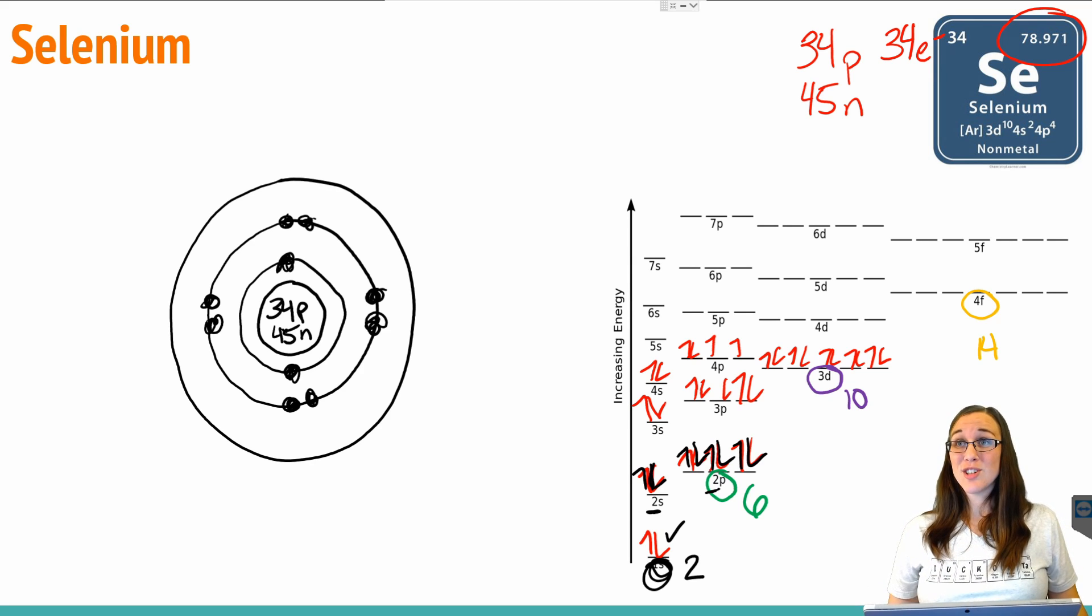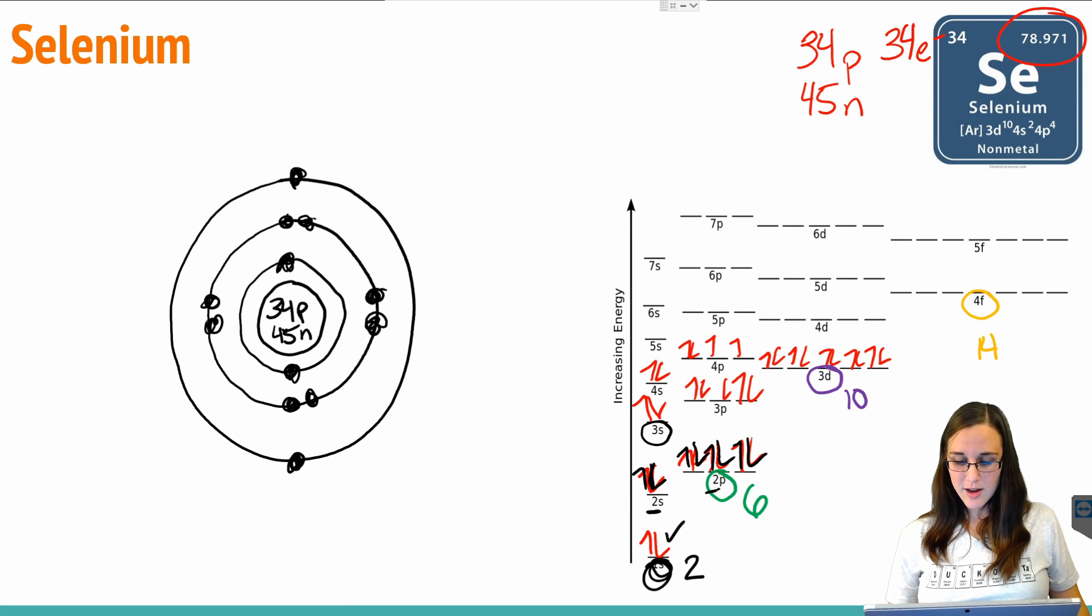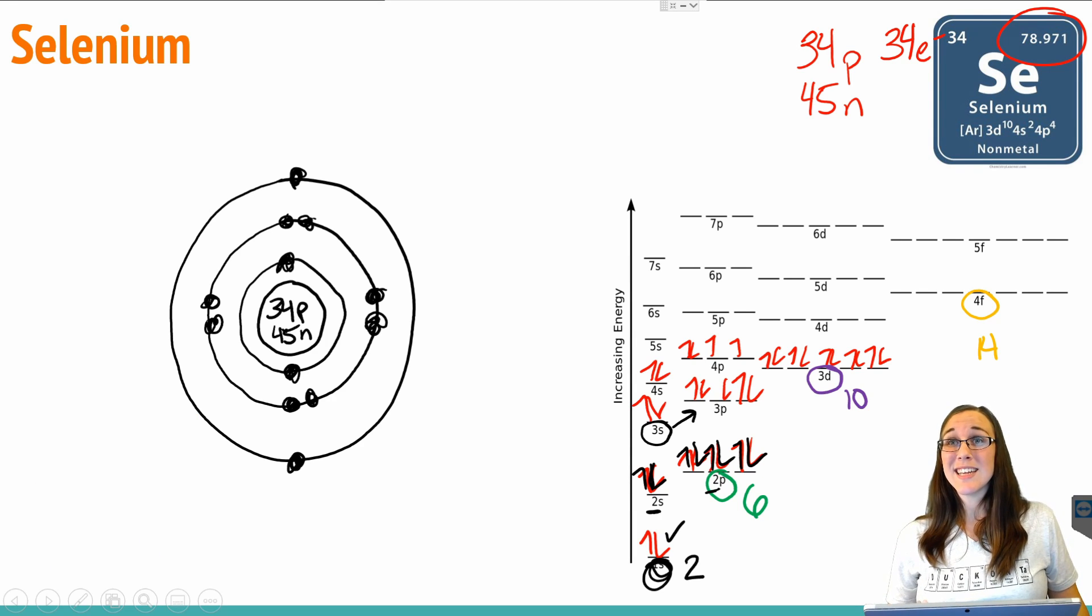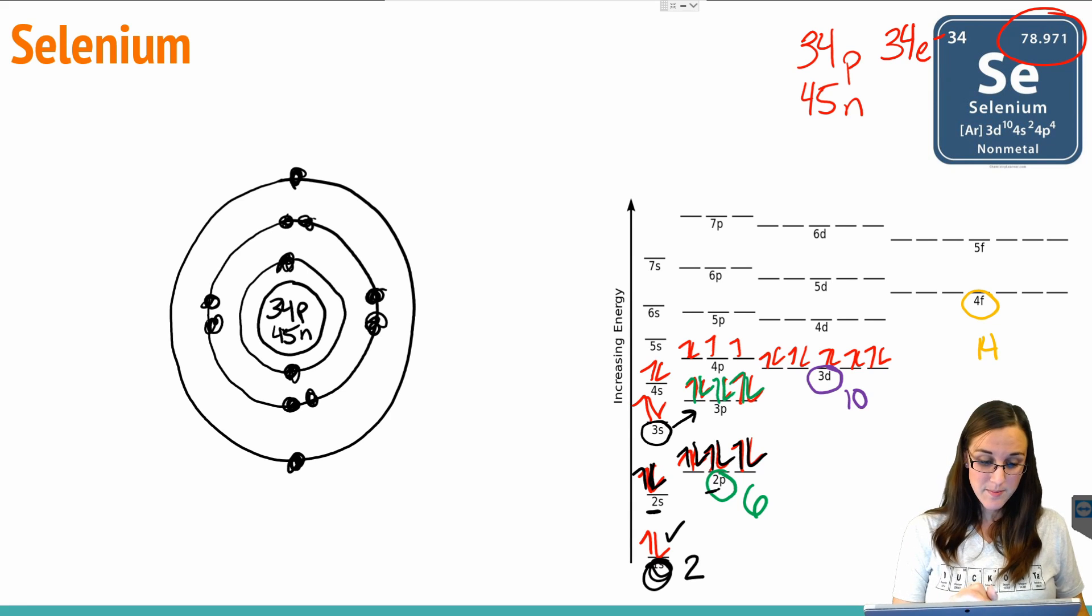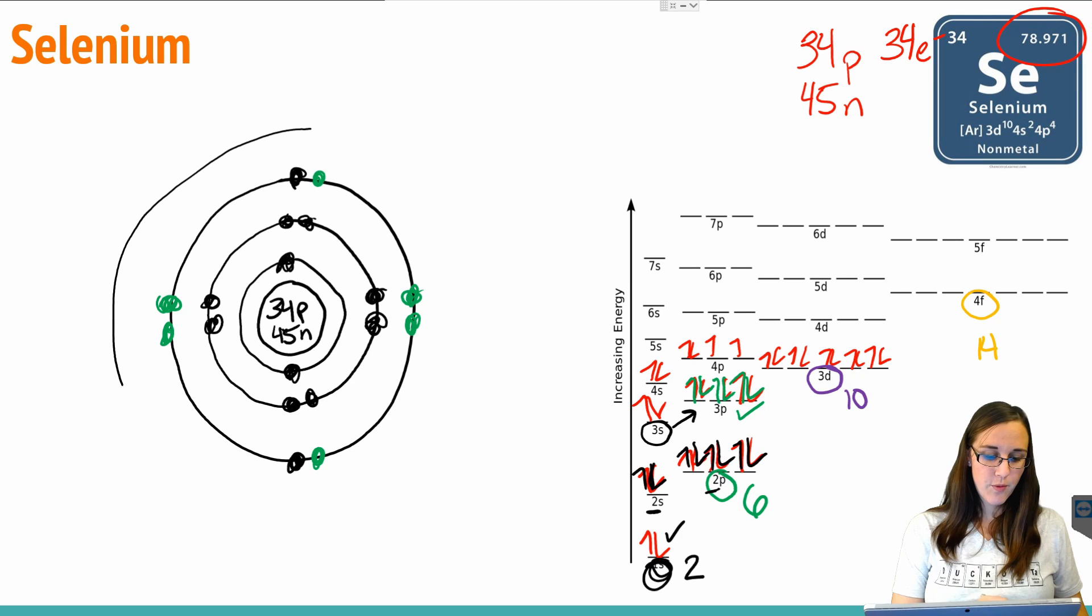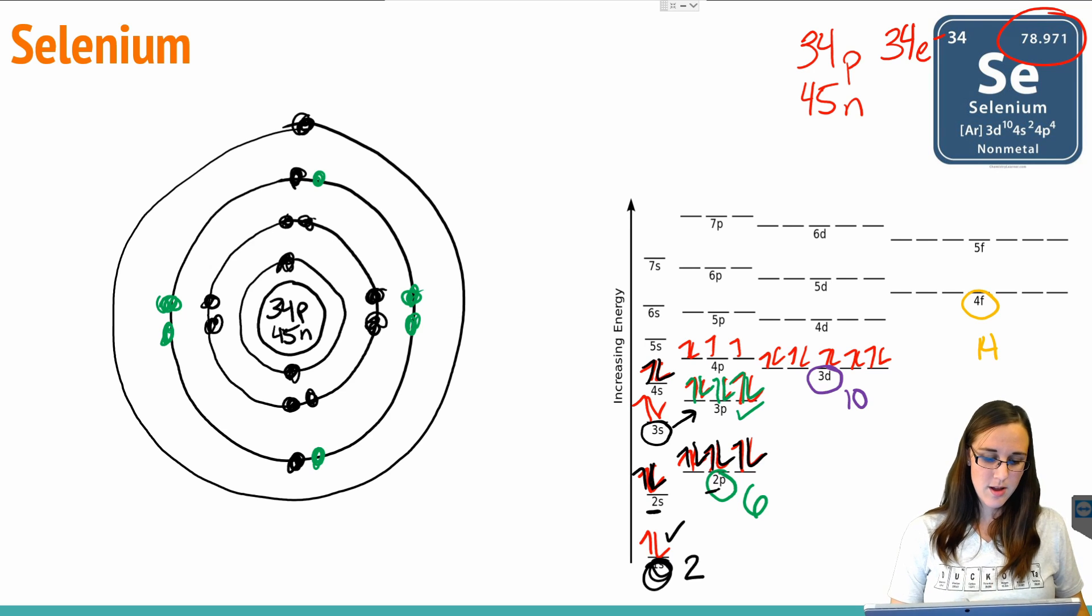We don't have any more 2s, so we need to go on to level 3, which means we need another shell, a third shell. Now that I've got a third shell, notice that there is 3s that has 2 electrons in it. Now we're moving on up to 3p, the next one. We've got 6 electrons in 3p, so let's put those in. Now we need to go to 4s, so we need to jump to the next shell. I'm going to draw a fourth shell. And in 4s we've got 1, 2 electrons.